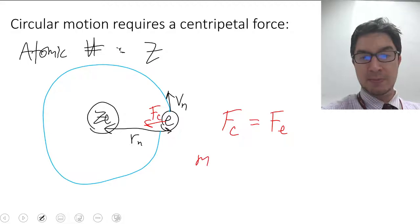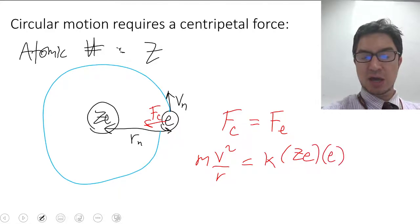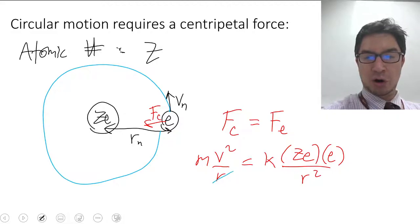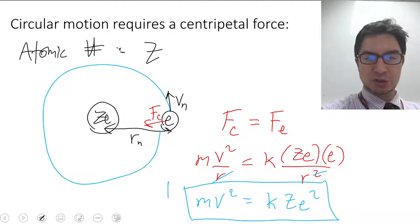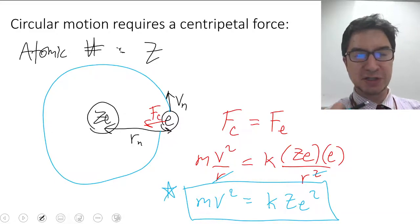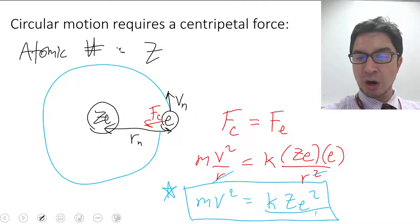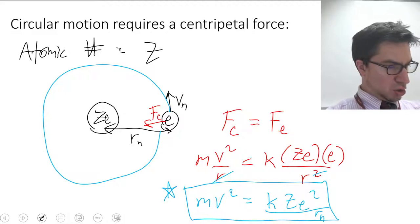So the centripetal force, mv squared over r, equals the electric force from Coulomb's law: k times the nucleus charge ze times the electron charge e, divided by r squared. When we simplify, one r cancels and we get mv squared equals kze squared over r sub n. This is a very helpful equation that we're going to use later, so keep an eye on it.